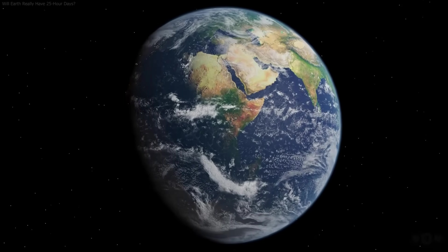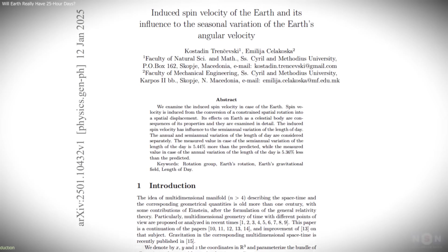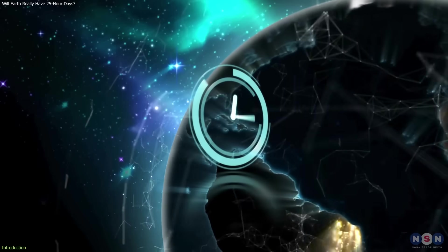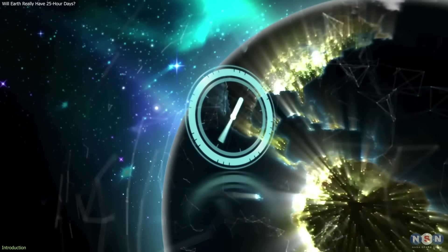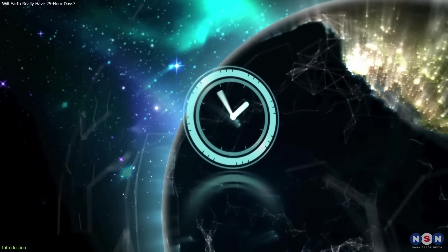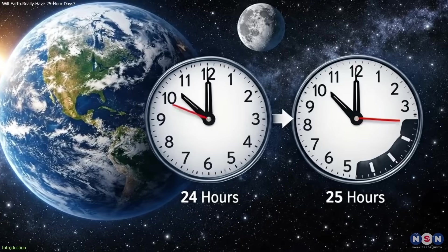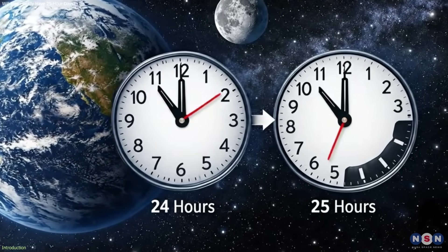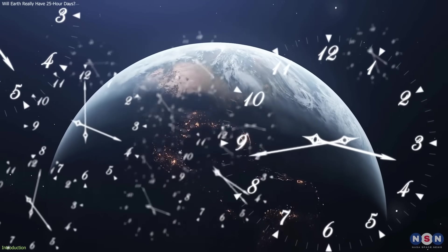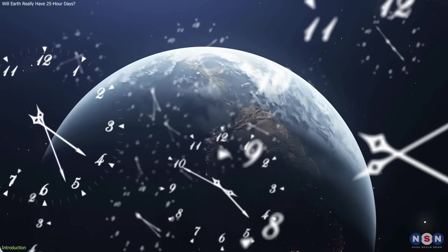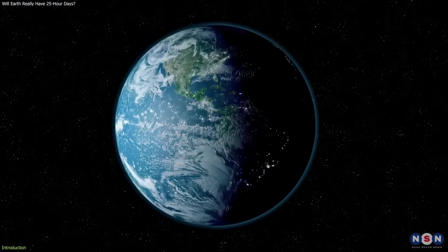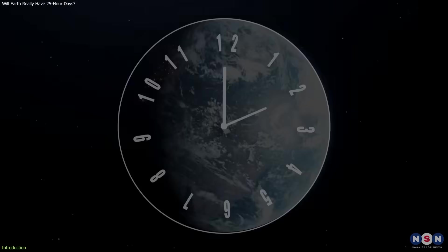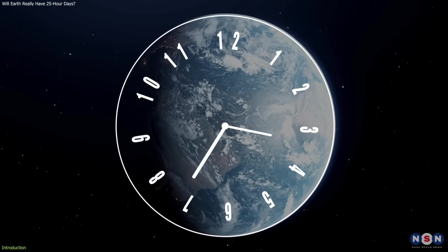Earth's rotation is slowing down, and recent studies have brought this long-known process back into public discussion. Some headlines suggest this could eventually lead to longer days, even reaching 25 hours. The science behind that idea is real, but the way it's often presented misses important context. These changes are measured in milliseconds and unfold over timescales far beyond everyday life. What matters is what scientists are actually observing today, how they measure it, and why it helps us understand Earth as a dynamic system.